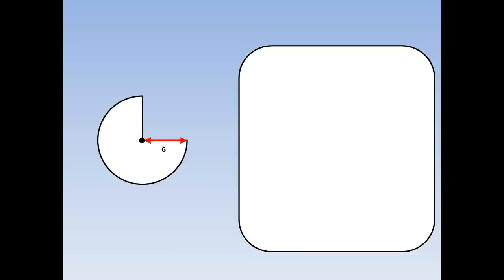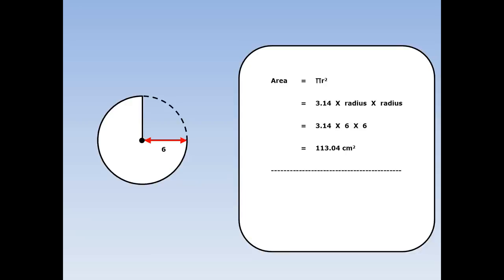Here we've got to find the area of three-quarters of a circle. This distance is 6 centimetres. So again I'm going to pretend I've got a whole circle and work out the area of that first. The area is pi r squared: 3.14 times the radius times the radius. The radius here is 6, so it's 3.14 times 6 times 6. The whole circle is 113.04 centimetres squared.